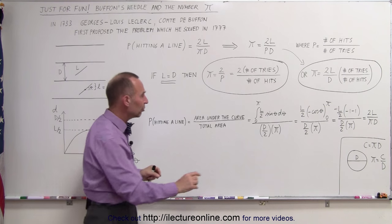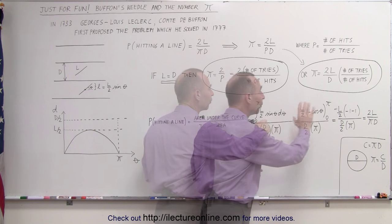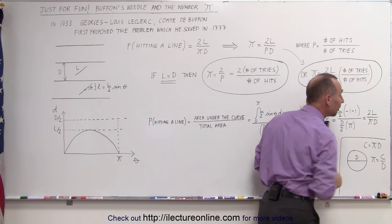If we then do a quick calculation, we do a quick integration, we indeed come up with 2L divided by pi D.